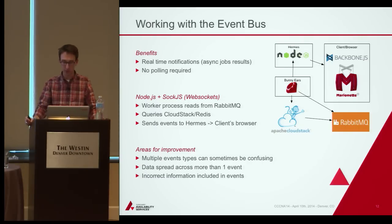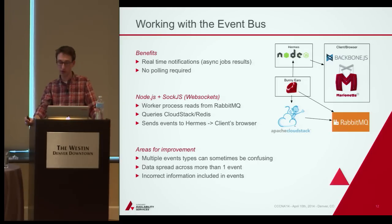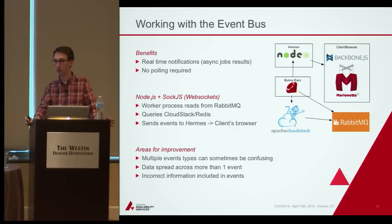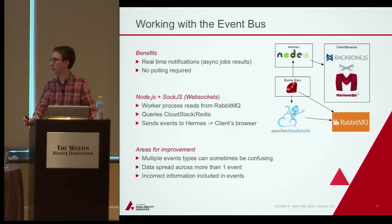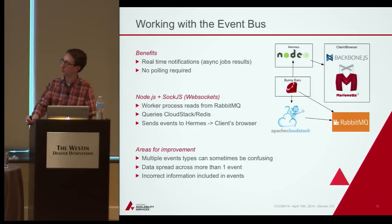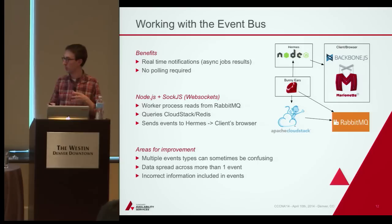On the event bus: we're using RabbitMQ. Originally we were on CloudStack 3.0.6, which didn't have the event bus, so we were polling — and we noticed quickly that wouldn't scale and was painful for user acceptance testing. We were really happy to move to 4.2. One area of confusion: the different types of events — action events, usage events, resource state change events, async job events — data was spread across multiple places, and figuring out which applied to our use cases took time.